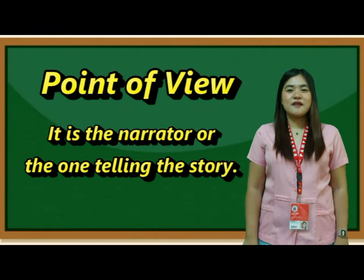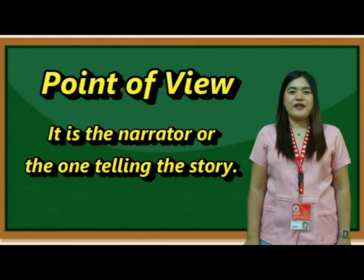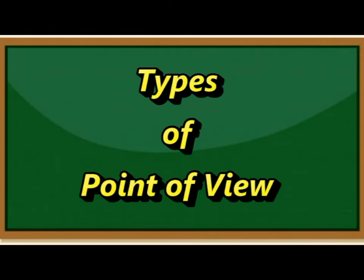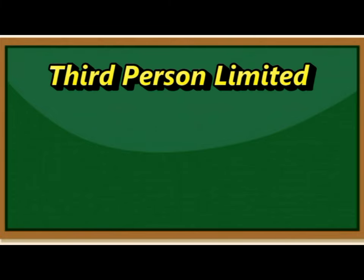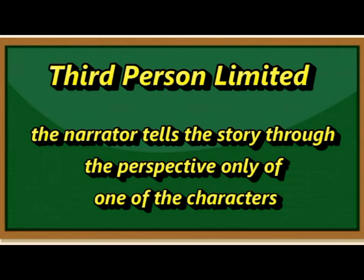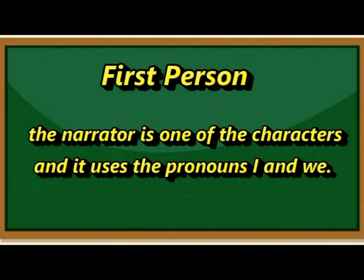Point of view — it is the narrator, or the one telling the story. Types of point of view: Third person omniscient — the narrator knows everyone and everything in the story. Third person limited — the narrator tells the story through the perspective of only one character; therefore, the narrator is limited to that character's feelings, thoughts, and actions. First person — the narrator is one of the characters and uses the pronouns I and we.